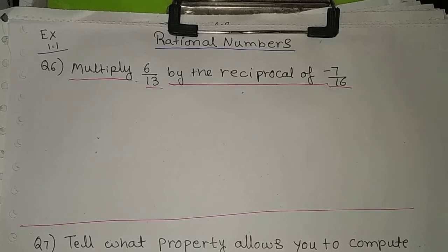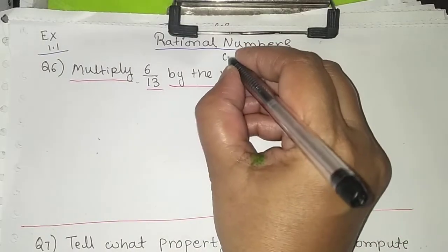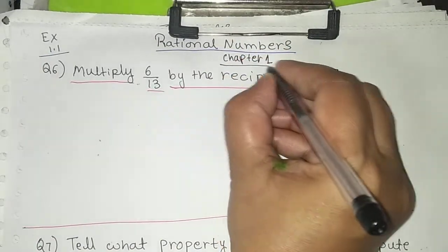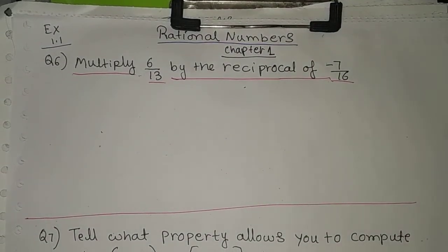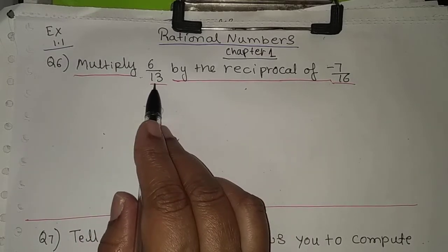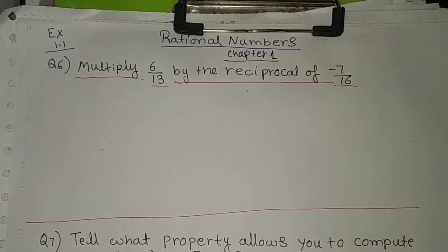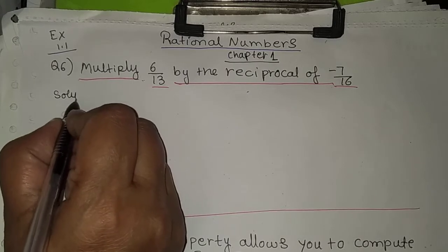Hello students, we'll continue with the rational number chapter, exercise 1.1. Today we solve question 6: multiply 6/13 by the reciprocal of minus 7/16.